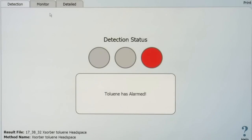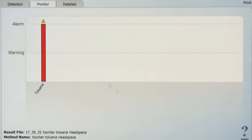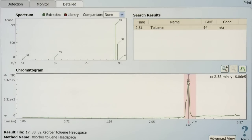You can see by the red light that the detection status has found the chemical toluene and it's showing us an alarm. From there, based on how you've trained your operators, they should know the appropriate protocol for what to do.